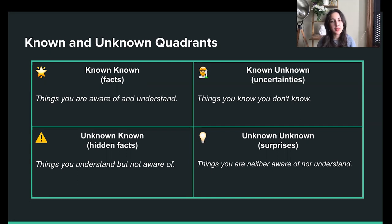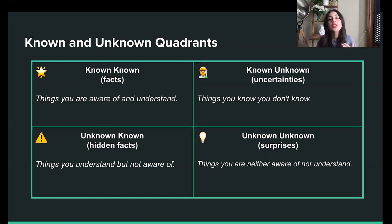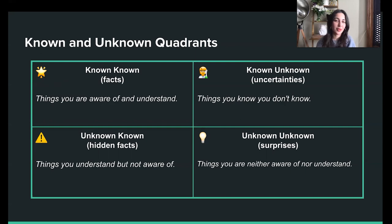In the top left, we have known knowns — we could call it facts. Things we are aware of and understand. This is the area we want to grow and maximize as much as possible. In the top right, we have known unknowns — we could call it uncertainties. Things you know that you don't know. You may have the ability to find out, but doing so requires some time and effort, so prioritizing properly is very, very important for this quadrant.